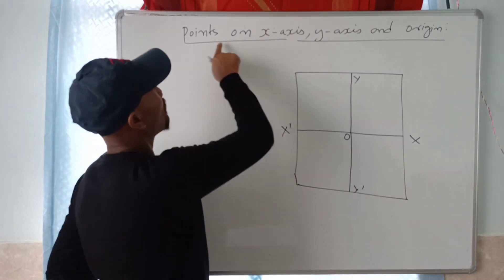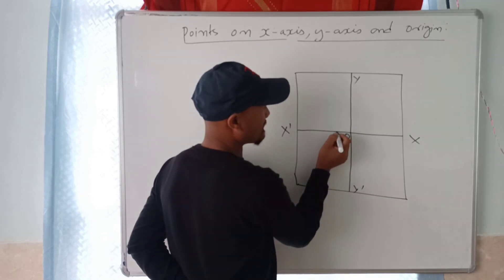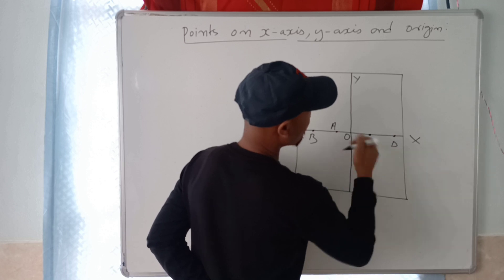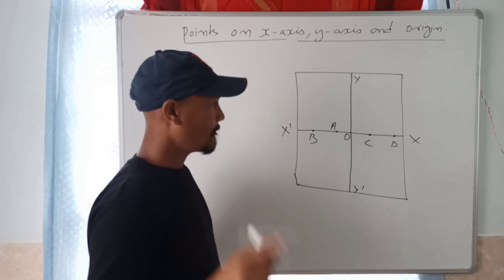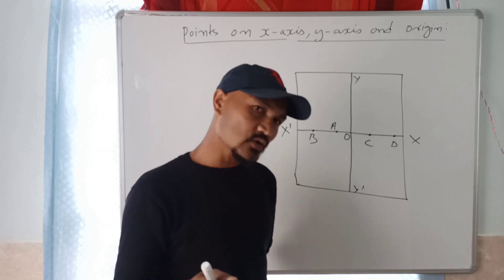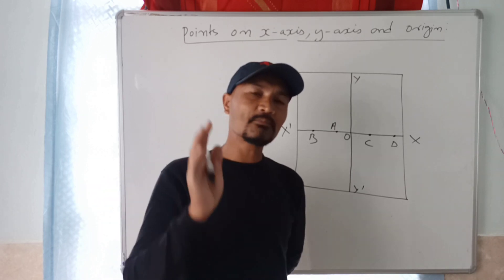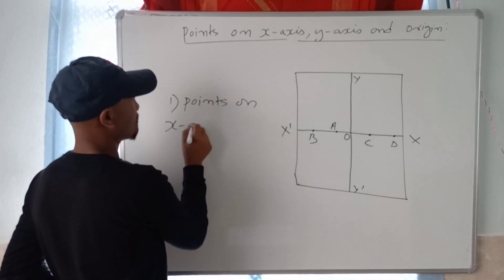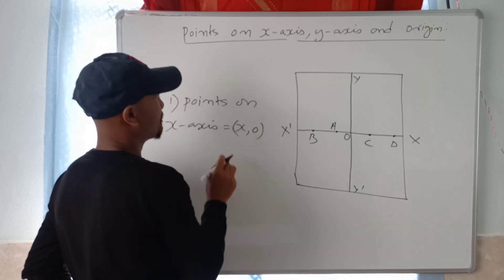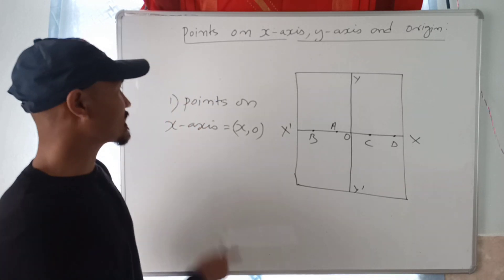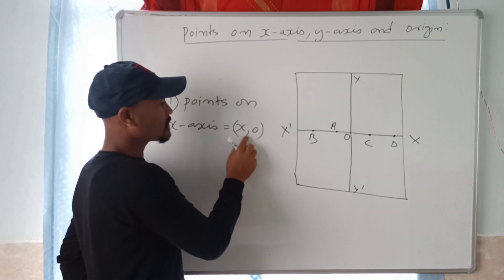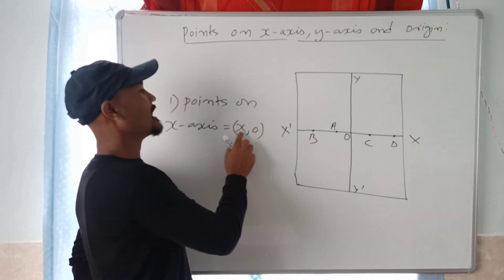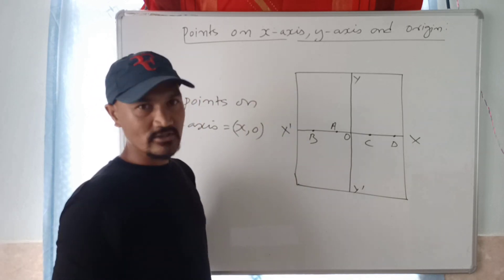Now, let's get points on the axis. If we need points on the axis — points A, B, C, D — we need points on the x-axis. If we need points on the x-axis, the value of y is 0. That's why the points on the x-axis have y equal to 0. So if you want to see the points on x-axis, the value of y is 0.